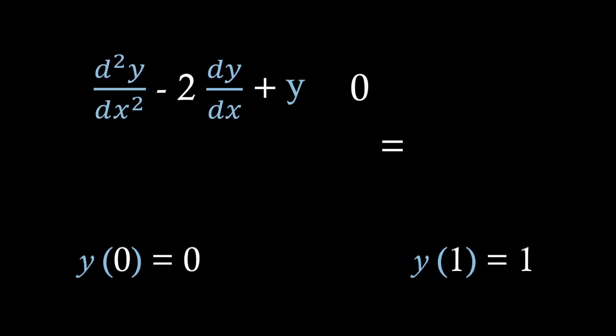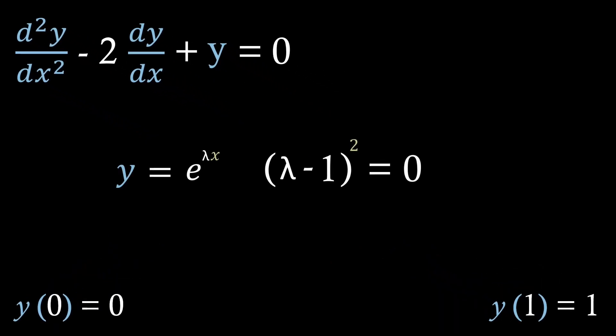The first thing we need to do again is find the general solution for our ODE. So we can see this is just using the auxiliary equation method, where we try solutions equivalent to e to the lambda x, and then solve for lambda. In this case, we actually have a repeated root where lambda equals 1. This gives us the repeated solution e to the x. So what we're going to do is just multiply one of these solutions by x. And then just as before, we'll add constants to the start of it to give us the general solution.